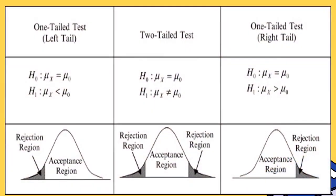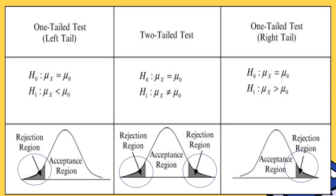These are the illustrations for two-tailed and one-tailed tests. For a two-tailed test, there are two rejection regions with the acceptance region in the middle. For a one-tailed left test, the rejection region is on the left side of the graph; for a right-tailed test, the rejection region is on the right.